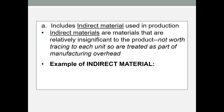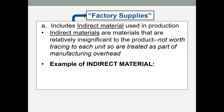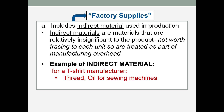Sometimes indirect material is called factory supplies. For a t-shirt manufacturer, this might include thread — if you don't want to trace that to each unit, it would be an indirect material. Oil for the sewing machines would be almost impossible to trace to each t-shirt. Scissors, thimbles, and other small tools would also be considered indirect material for a t-shirt manufacturer.